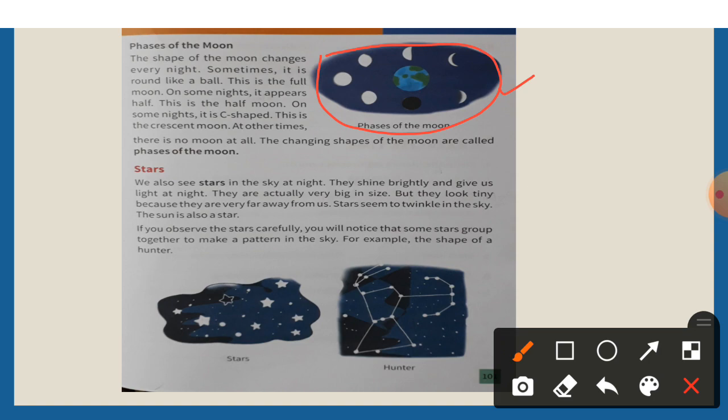On some nights it is crescent-shaped - this is the crescent moon. At other times there is no moon at all. The changing shapes of the moon are called phases of the moon.